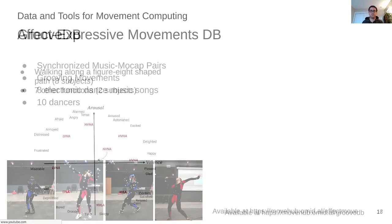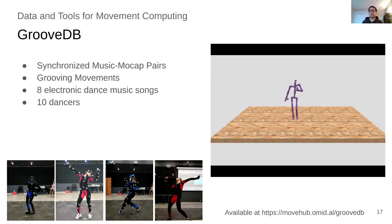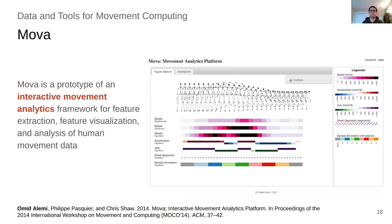Our second dataset is GrooveDB. It contains synchronized music and motion capture pairs from 10 dancers. Next, we present MOVA, which is an interactive movement analytics framework. The key idea is to be able to load multimodal movement data, connect to a library of features, and be able to visualize everything in parallel. The applications would be either exploring a segment of movement data, or developing and evaluating feature extraction techniques and algorithms.